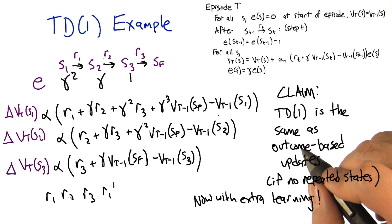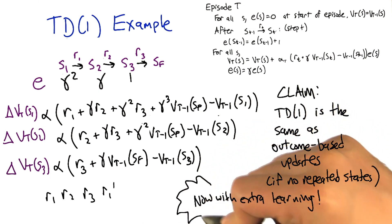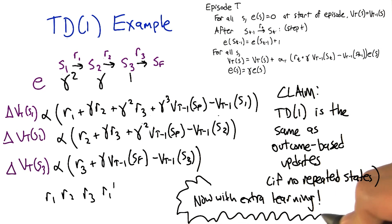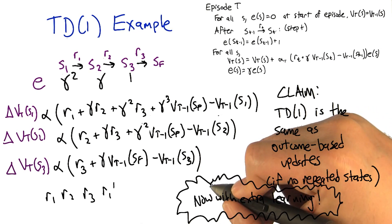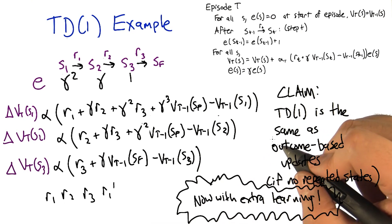So what this TD(1) update lets you do is, when you see S1 again and you back up its value, you've actually captured the fact that last time you were in S1, you went to S2 and saw reward R1.